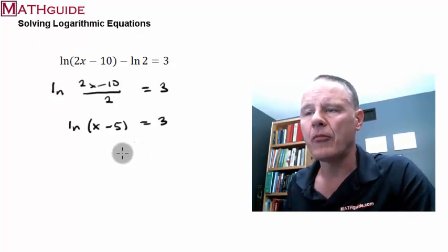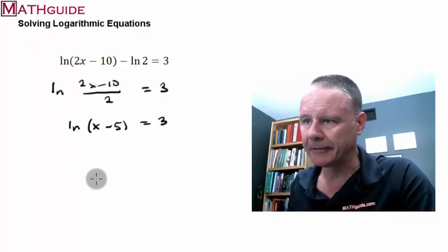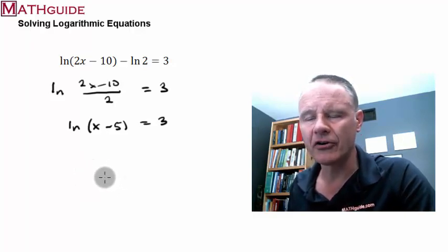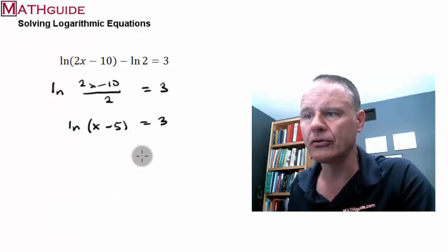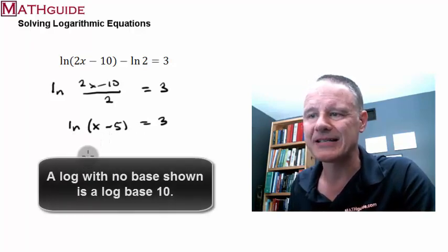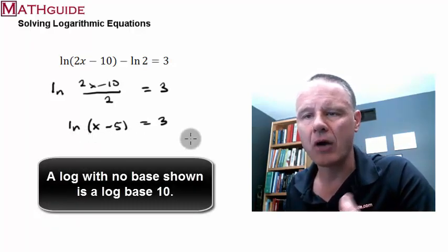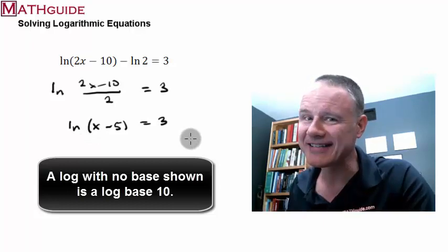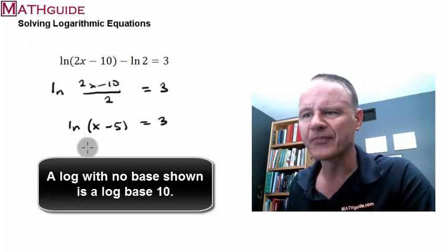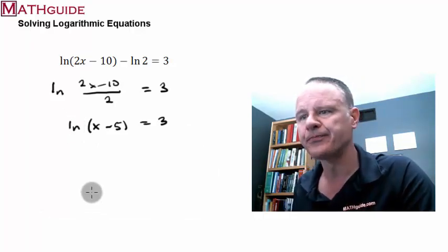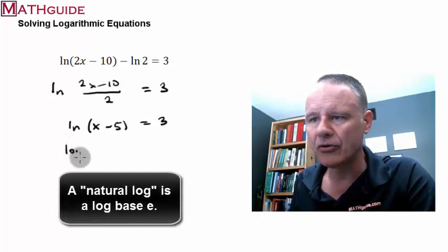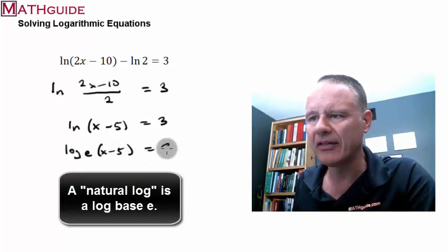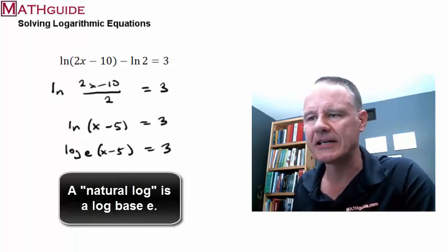When I have a logarithm only on one side, the strategy changes a little bit. What we're going to do is we're going to use the conversion between logarithmic form and exponential form. So we're going to convert. Now, to convert, I need to know what this base is. Now, you don't see a base. Now, if you just see a log with no base, it's base 10. But this is a special log. This isn't just a plain old log. This is the natural log, LN. So, if this is the natural log, there is a base. So, when you don't write the base in this form, it's base E. Really, that is the code. Natural log is log base E.